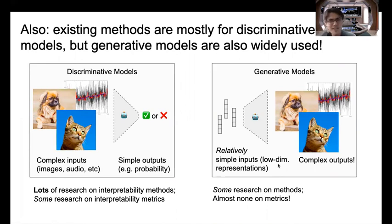However, there's been a lot less work on generative modeling, which is kind of the other main branch of machine learning. Examples include auto-encoders, topic models, or GANs. There's been relatively little research on how to interpret generative models, and almost none on how to evaluate their interpretability.